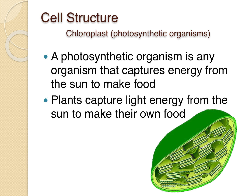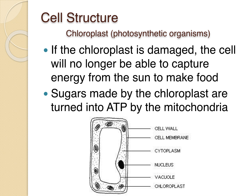Chloroplasts are found in photosynthetic organisms — any plant or organism that makes energy from the sun. They capture light energy and convert it into sugar, which is then used by the mitochondria to make ATP. If the chloroplast is damaged, the cell cannot capture energy from the sun. On state tests, you may need to identify a plant cell: the key structures are the cell wall, the central vacuole, and the chloroplast.